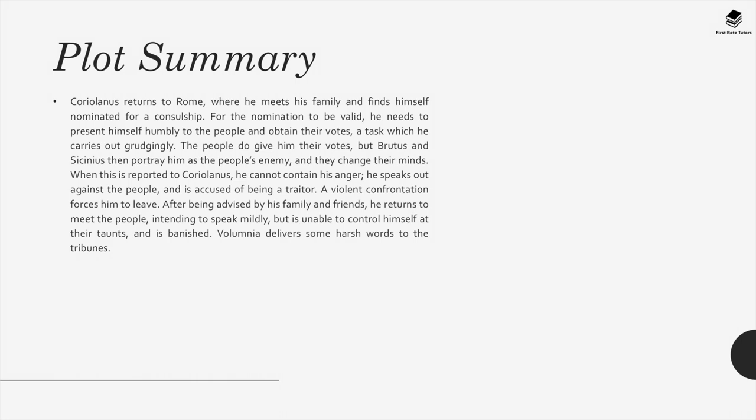For his part in the battle, Martius is given the honorary title of Coriolanus. He returns to Rome where he meets his family and finds himself nominated for a consulship. For the nomination to be valid, he needs to present himself humbly to the people and obtain their votes, a task which he carries out grudgingly. The people do give him their votes but Brutus and Sicinius then portray him as the people's enemy and they change their minds. When this is reported to Coriolanus he cannot contain his anger, speaks out against the people, and is accused of being a traitor. A violent confrontation forces him to leave. After being advised by his family and friends, he returns to meet the people intending to speak mildly, but is unable to control himself at their taunts and is banished.